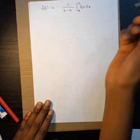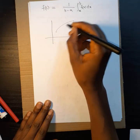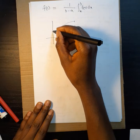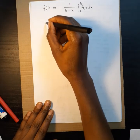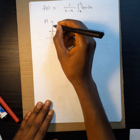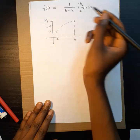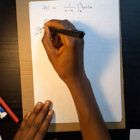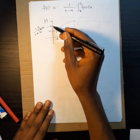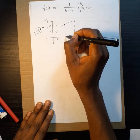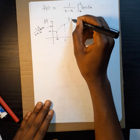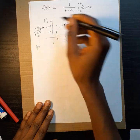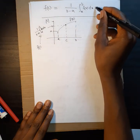Because f is a continuous function on [a, b] with minimum m and maximum M, and our value 1/(b−a) times the integral lies between them, the intermediate value theorem guarantees a number C between a and b such that f(C) equals 1/(b−a) times the integral from a to b of f(x) dx. That is what the mean value theorem for integrals states.